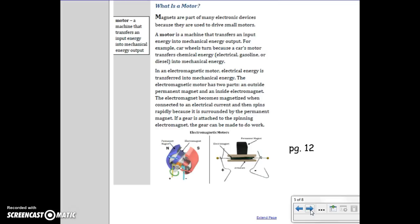In an electromagnetic motor, electrical energy is transferred into mechanical energy. The electromagnetic motor has two parts, an outside permanent magnet and an inside electromagnet. The electromagnet becomes magnetized when connected to an electrical current, then spins rapidly because it is surrounded by the permanent magnet. If a gear is attached to the spinning electromagnet, the gear can be made to do work.